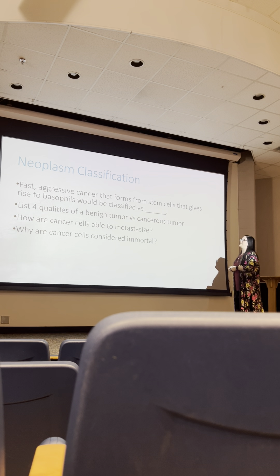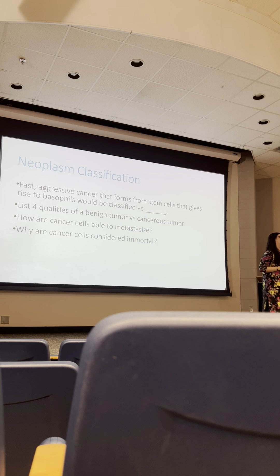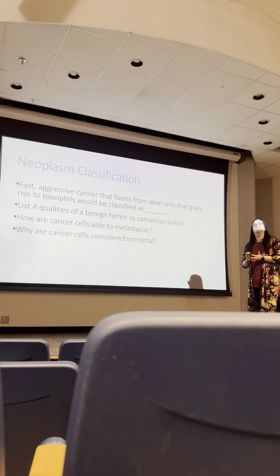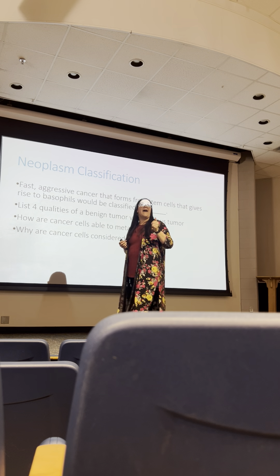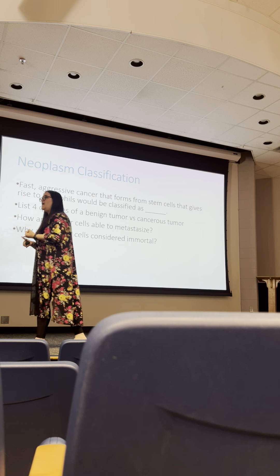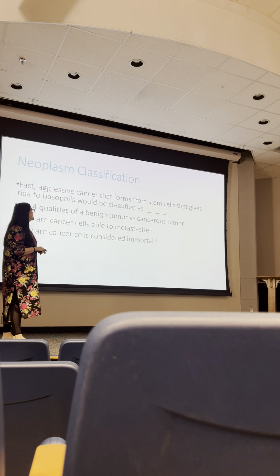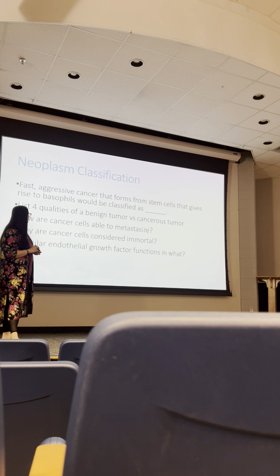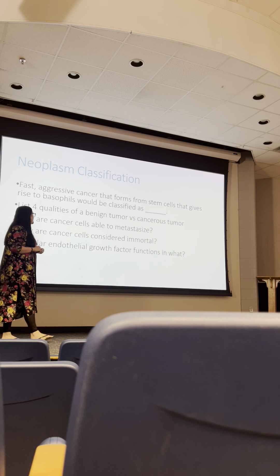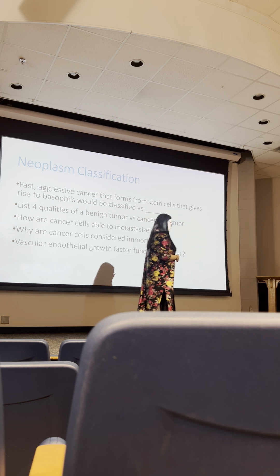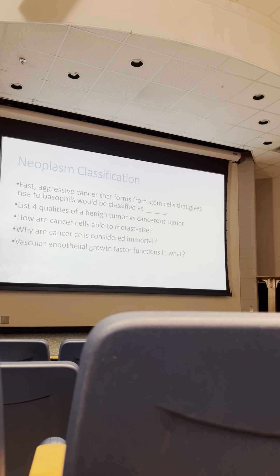Why are cancer cells considered immortal? They have active telomerases, which are never supposed to be active in healthy cells unless they are stem cells or germ cells. Active telomerase refills the telomere caps on chromosomes, so when telomere caps get shortened, they can add more and more telomeres — making cancer cells replicatively immortal.